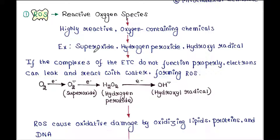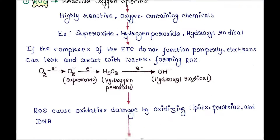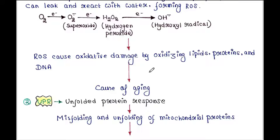If the complexes of the electron transport chain do not function properly, electrons can leak and react with water, forming ROS. ROS can cause oxidative damage by oxidizing lipids, proteins, and DNA. They are the main reasons of aging.